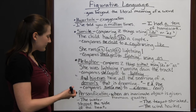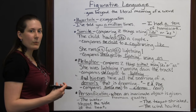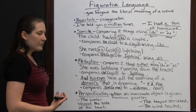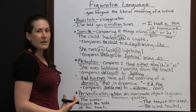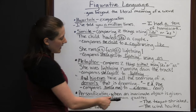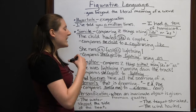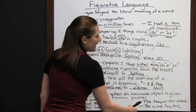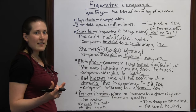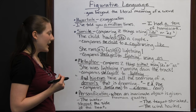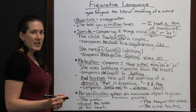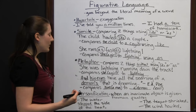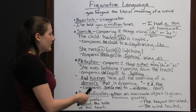Depending on what the story is about, the water could be made into an evil character — if someone drowns, the water would be seen as an enemy, so it slapping the boat gives it a negative feeling. Another example: 'The teapot shrieked.' A teapot isn't actually shrieking like a person would, but it makes that loud sound. Or 'the wind howled' — wind can't howl like a wolf, but wind makes that same kind of sound, so the author puts that image in your mind.